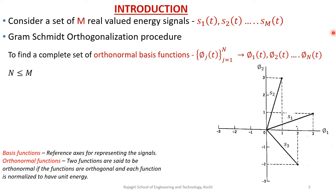Now let's see what is the Gram-Schmidt orthogonalization procedure. A set of real-valued energy signals can be represented as points on an N-dimensional space. Therefore we require a set of mutually perpendicular axes so as to represent the signal as a point. The technique used to determine the set of mutually perpendicular axes is called the Gram-Schmidt orthogonalization procedure. We consider M real-valued energy signals s1(t), s2(t), ..., sM(t).